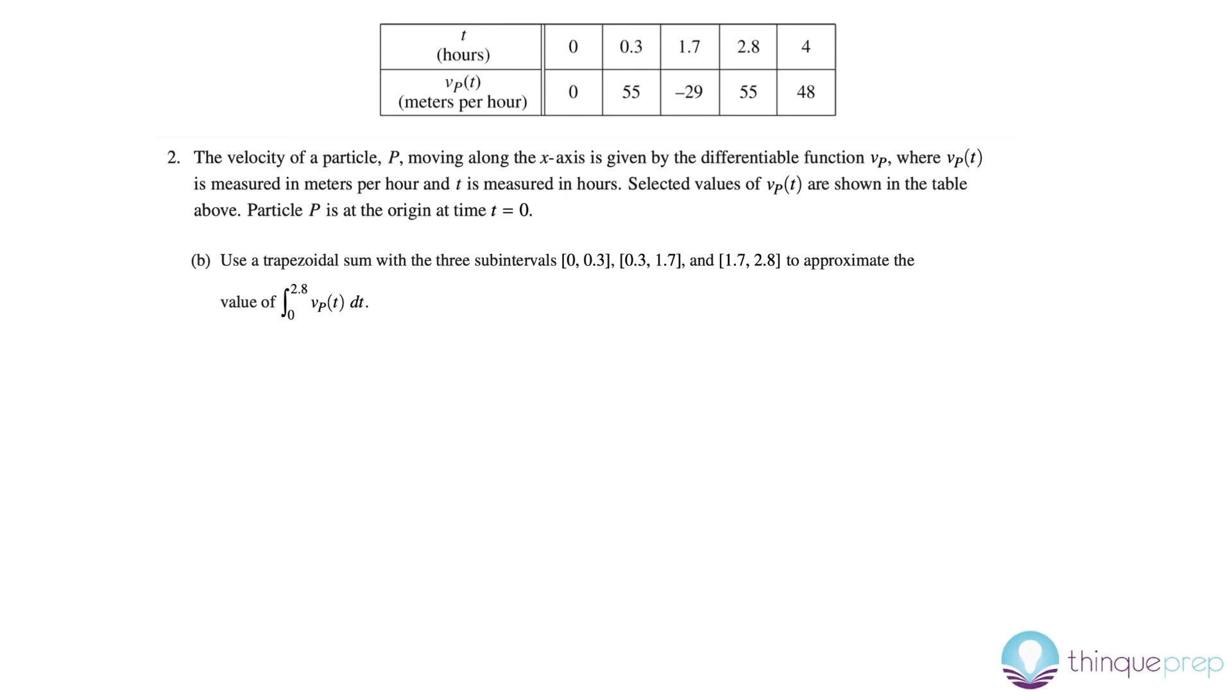Part b asks us to use a trapezoidal sum with these three subintervals, 1, 2, and 3, to approximate the value of the integral from 0 to 2.8 of vp(t). The integral is also known as the area under the curve. So, to refresh really quickly, the area of the trapezoid from geometry is 1/2(b1 + b2) times height. Or, I like to think of this formula as we're averaging the two bases, and we're multiplying it by the height of the trapezoid.